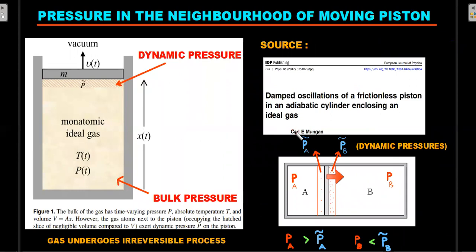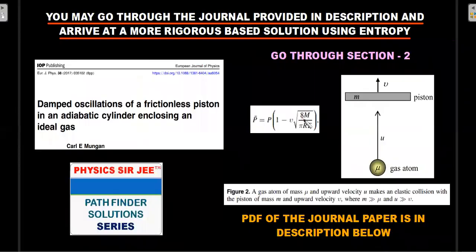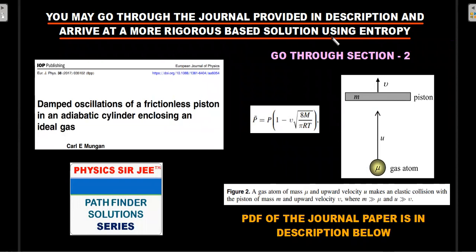The link to the journal PDF is in the description — go through section 2, which discusses dynamic pressure and the speed of gas atoms relative to the moving piston, and derives the dynamic pressure in terms of bulk pressure P. This can be applied to the pathfinder question to arrive at a rigorous entropy-based solution giving the same answer. This approach is especially recommended for olympiad preparation.